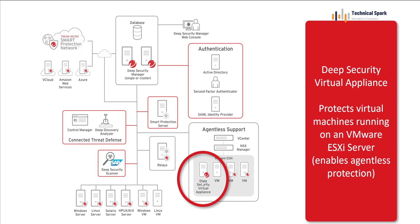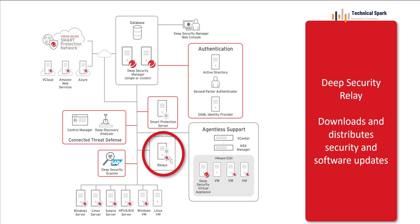If you have an ESXi server environment with multiple VMs and don't want to install the Trend Micro Deep Security agent on every server due to resource utilization, you can go agentless. For that, you install one Deep Security Virtual Appliance, and this appliance will scan all servers available in your vCenter or ESXi. The relay server also plays a very important role.